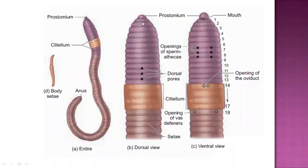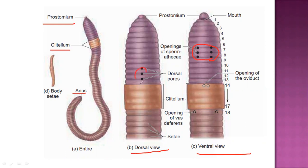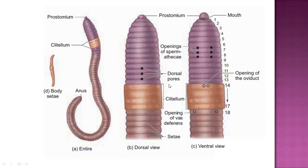The nephridiopores are one of the excretory organs. On the ventral side there are openings of the oviduct and the vas deferens. The oviduct carries the egg and the vas deferens carries sperm from the testis — so a single animal correctly performs two functions as a hermaphrodite.